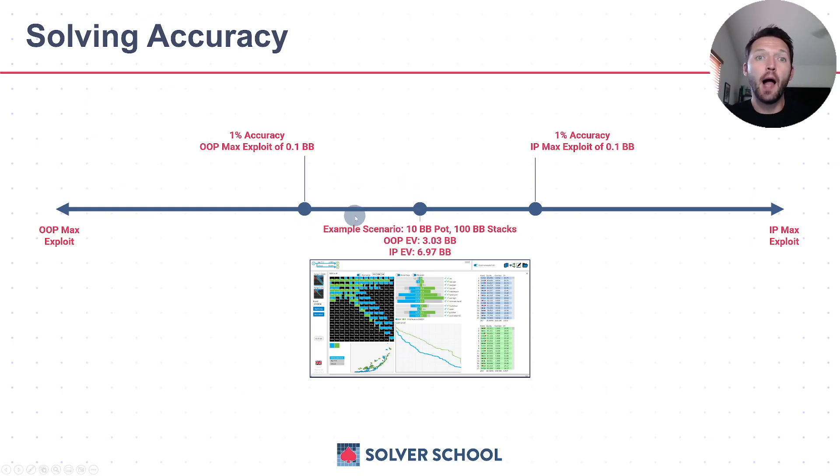What that's implying is that our equilibrium solution is somewhere in this box, somewhere between this level and all the way here. There could be many possible solutions that fit within this spectrum. But at the end of the day, what we're saying is that this strategy we've selected can't be exploited for more than 1% of the pot on either side of the spectrum.